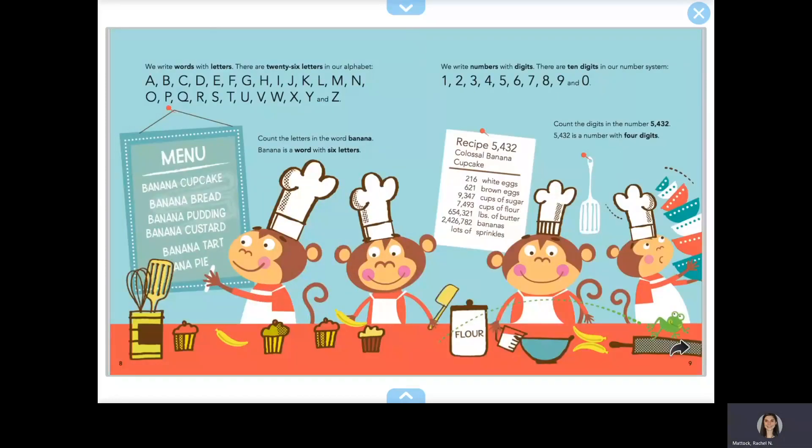We write words with letters. There are 26 letters in our alphabet. Count the letters in the word banana. Banana is a word with six letters.